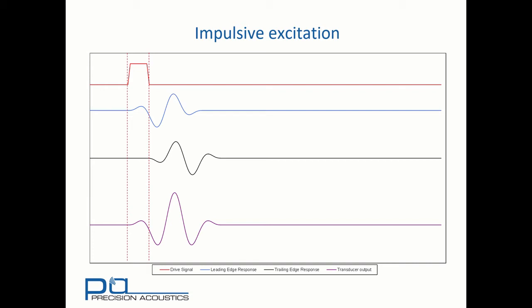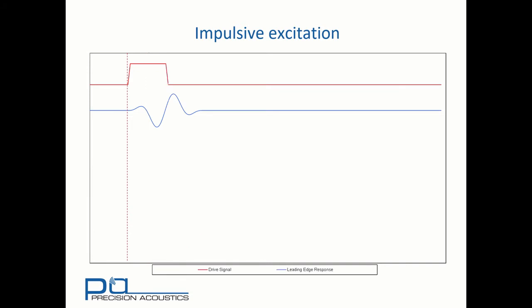Notice here that the width of the square pulse has been tuned to the frequency of the transducer. If we have an untuned pulse, in this case one which is much longer than the transducer's natural frequency, we again have a leading edge response and a trailing edge response.